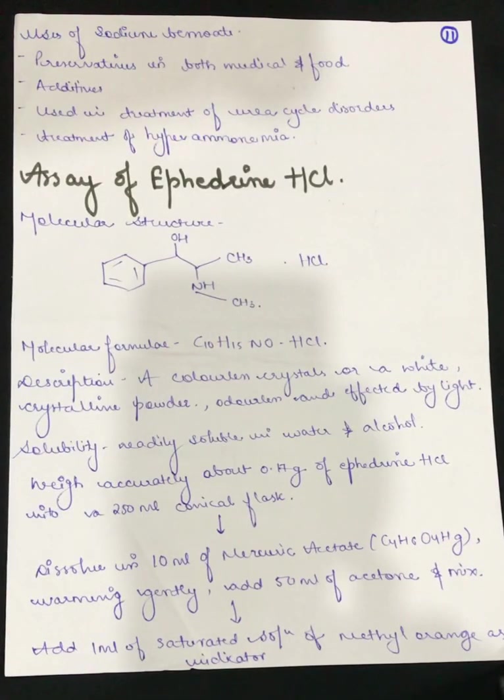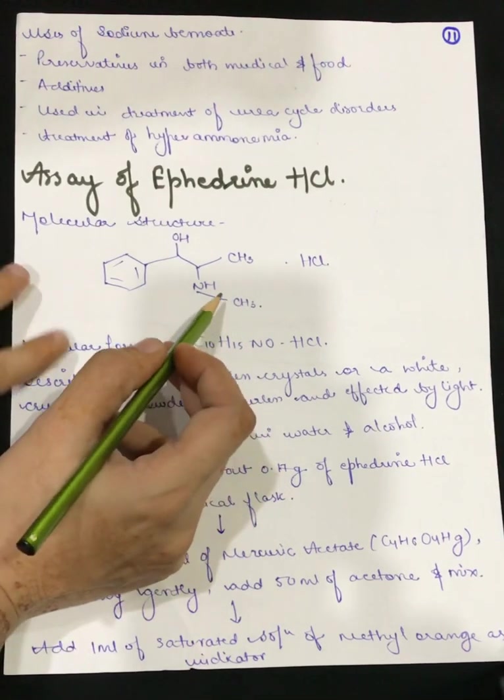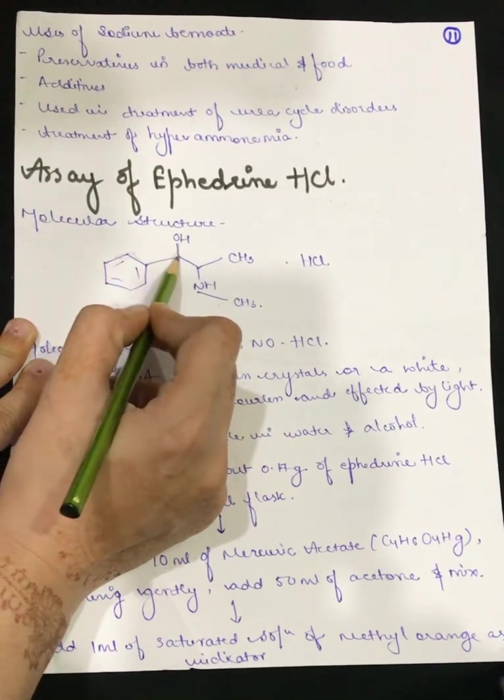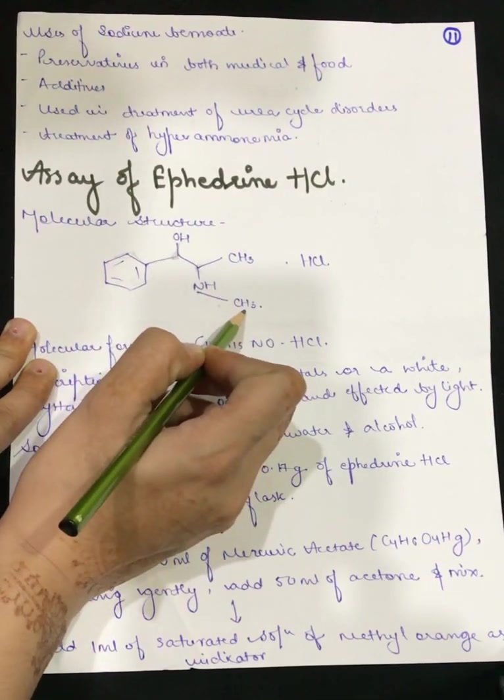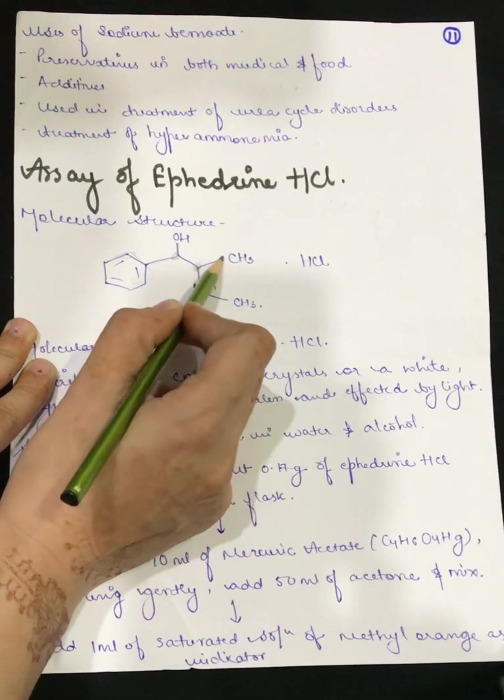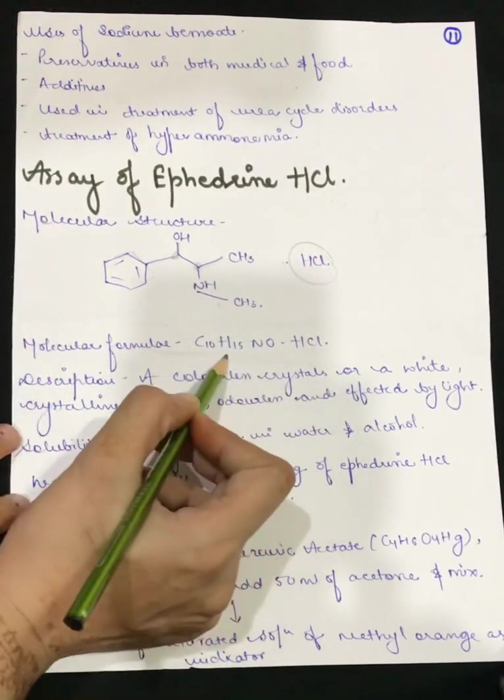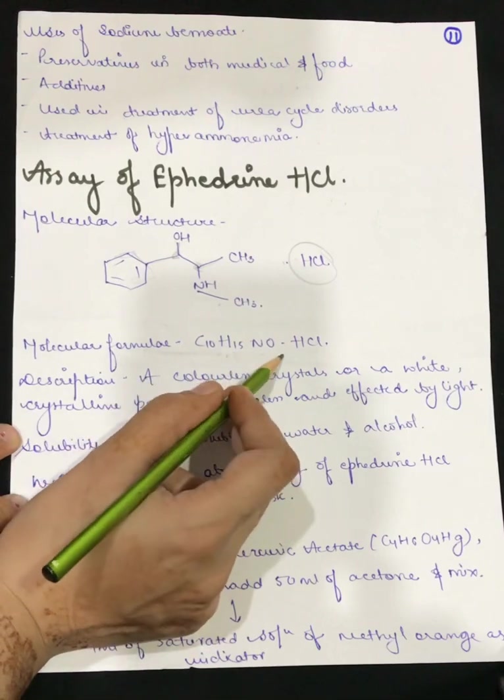Now let's see the assay of ephedrine hydrochloric acid. The molecular structure of ephedrine hydrochloric acid is shown below with a benzene ring attached to COH, CNH which is attached to CH3, and this carbon has one CH3 plus hydrochloric acid. Molecular formula is C10H15NO.HCl.